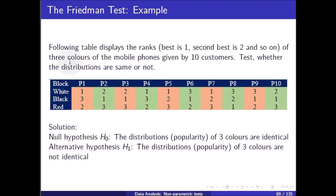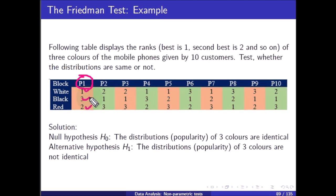Test whether the distributions are the same or not. Customers P1 to P10 — 10 customers total — are rating three colors: white, black, and red. Customer 1 gave first rank to white, second rank to red, and third rank to black.